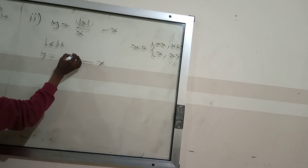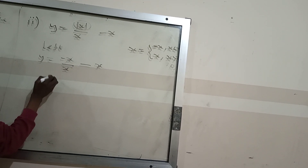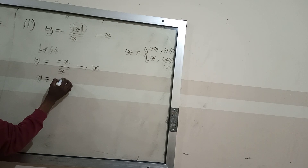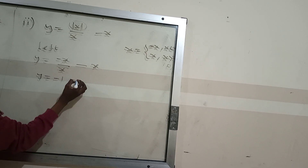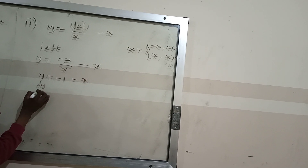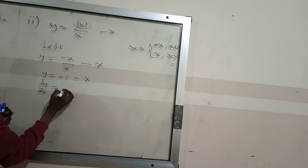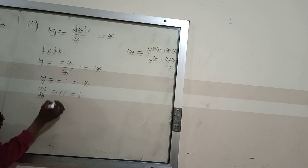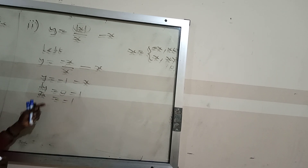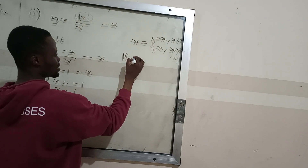For the left hand side, we substitute negative x in place of |x|, so we get y equals negative x over x, minus x. The x cancels, giving y equals negative 1 minus x. Finding dy/dx gives zero minus 1, so the answer is negative 1. We keep that result.